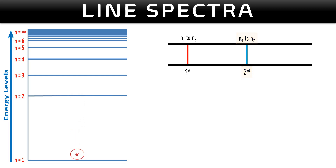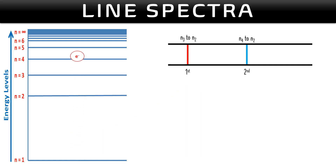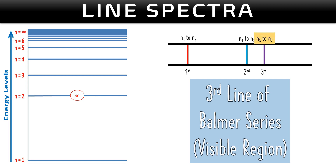For the third line of Balmer series, the electron at the ground state absorbs energy, goes up to n=5, then drops to n=2 — energy is emitted and the third line of Balmer series is produced. The color of this line is purple or indigo. So you have three different colored lines in Balmer series — red, blue, and purple — all visible in the visible region and can be seen with your naked eyes.